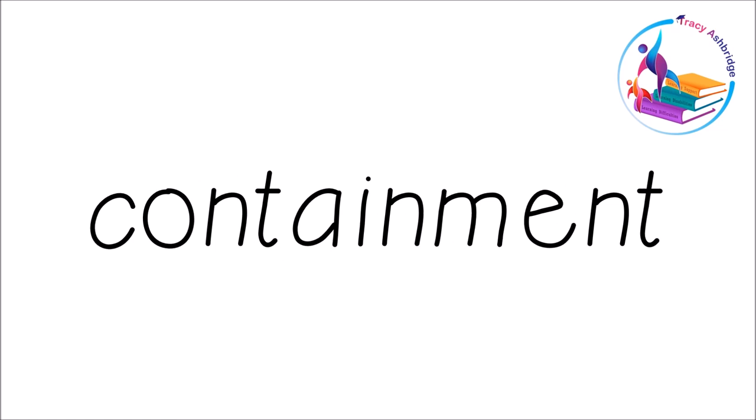Let's look at this one. Vowel, consonant, chop. Two vowels here working together to say A — chop. Vowel here, consonant — and we're going to ignore the T at the end because we can't chop a T off on its own. K-O-N — 'con', T-A-I-N — 'contain', M-E-N-T — 'ment'. 'Containment'.